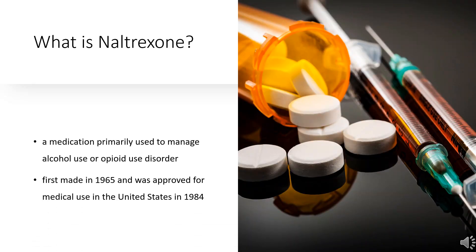What is naltrexone? Naltrexone, sold under the brand names Revia and Vivitrol among others, is a medication primarily used to manage alcohol use or opioid use disorder by reducing cravings and feelings of euphoria associated with substance use disorder. Naltrexone was first made in 1965 and was approved for medical use in the United States in 1984.